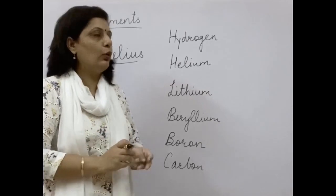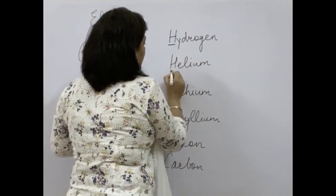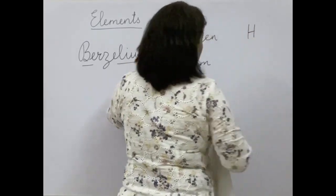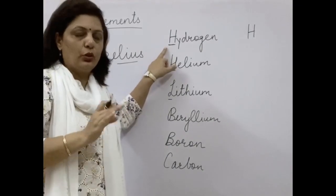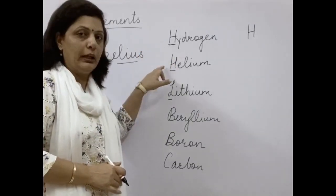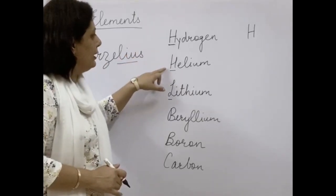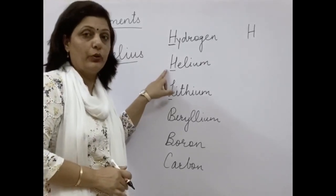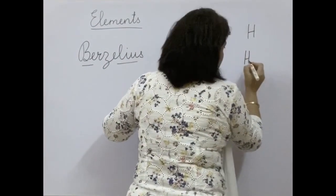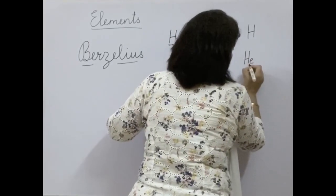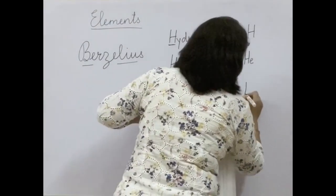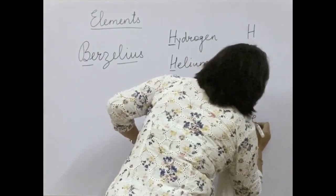Berzelius said it is easy to denote a particular element with the first letter of its name, written as a capital letter. So hydrogen is written as H. But if two elements begin with the same letter — for example, hydrogen and helium both begin with H — then we need something else. He suggested using the first letter as capital and the second adjacent letter in small letters. So helium becomes He. This is how we learn all the symbols.